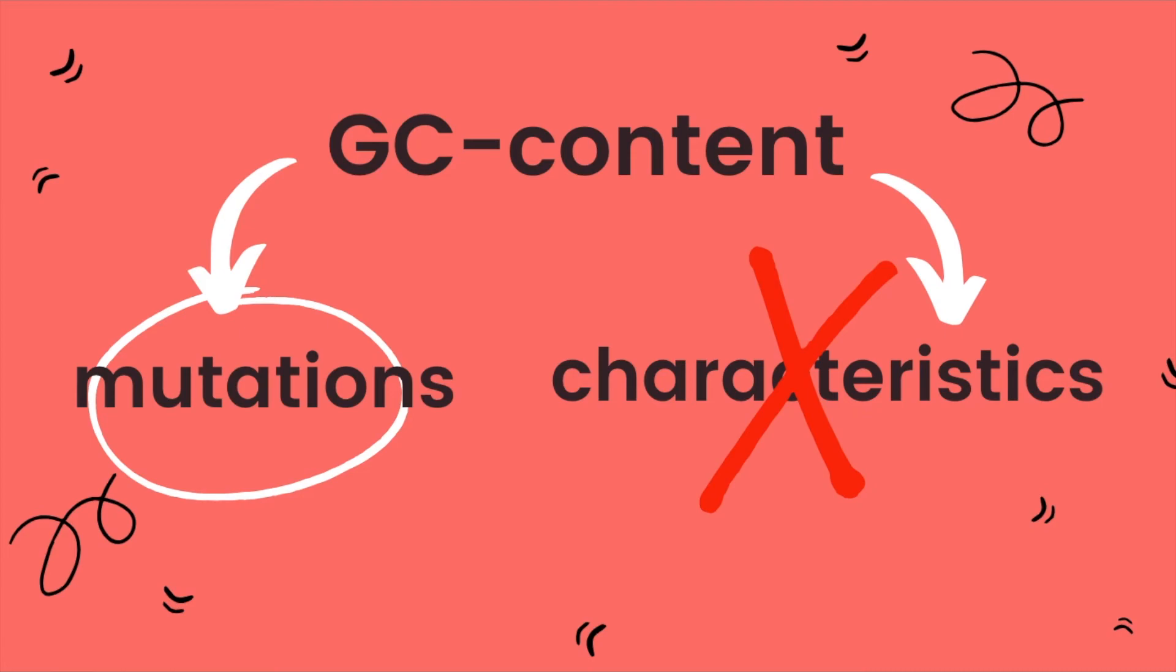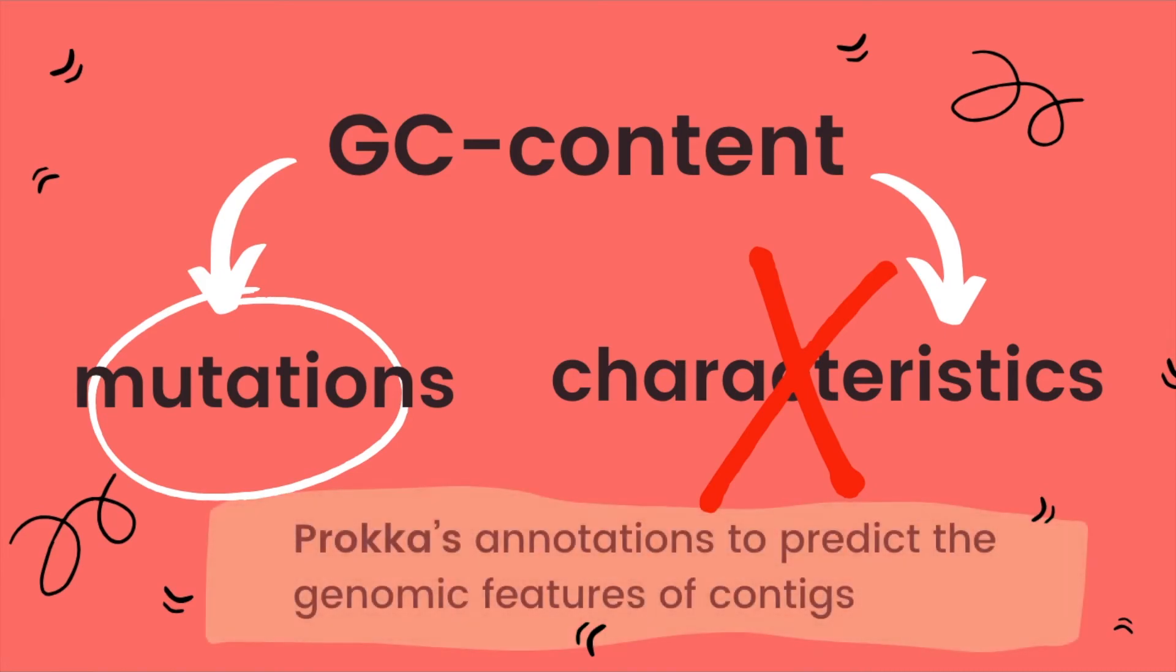In order to identify these mutations, I suggest using PROKKA's annotations to predict the genomic features of contigs that have GC content below 50% as I believe it is a good starting point in understanding how the mutation has affected the genes.